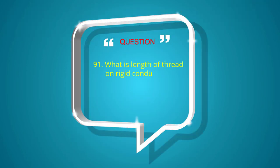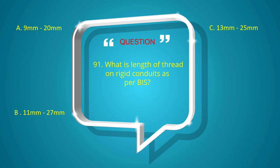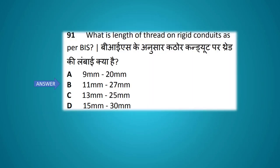What is the length of thread on rigid conduit as per BIS? Options: 9 mm to 20 mm, 11 mm to 27 mm, 13 mm to 25 mm, 15 mm to 30 mm. The answer is 11 mm to 27 mm.